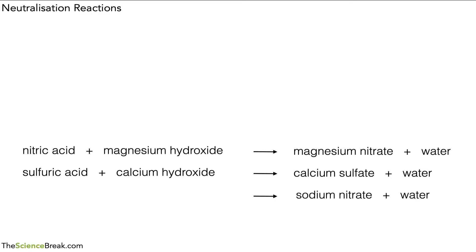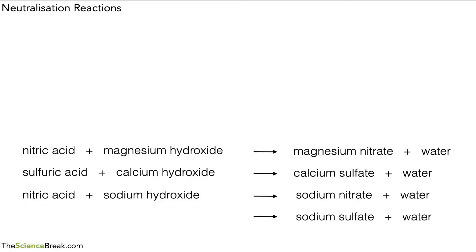Now let's make it a little bit trickier. Let's look at the two products and see if you can decide which acid and which alkali produced those products. The answer for the first one should be nitric acid and sodium hydroxide. For the final one, the two products are sodium sulfate and water, and the acid and alkali were sulfuric acid and sodium hydroxide.